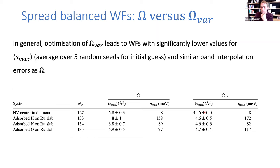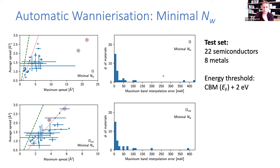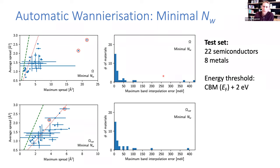Other examples include an NV center in diamond and hydrogen, nitrogen, and oxygen atoms adsorbed on a ruthenium slab. In all cases, systematically we get better localization of the most delocalized Wannier function with the variance-minimizing functional — exactly what we expect. The band interpolation error is very comparable, so we don't see a systematic improvement there, but we do see a systematic improvement in the maximum spread.